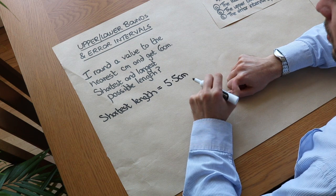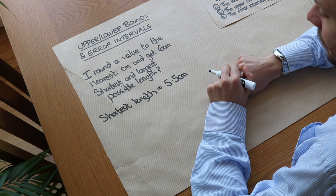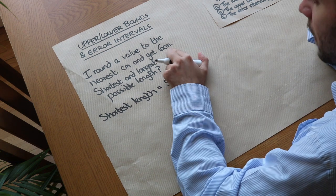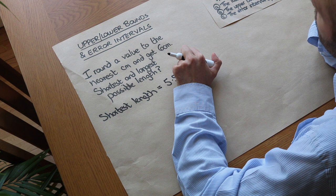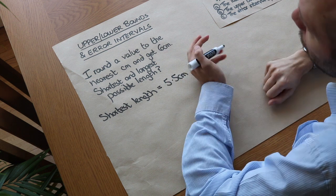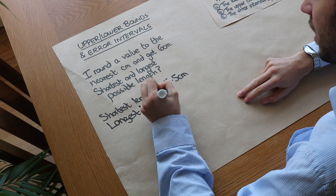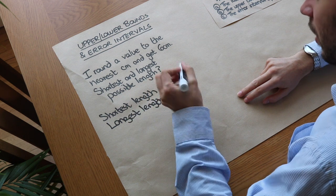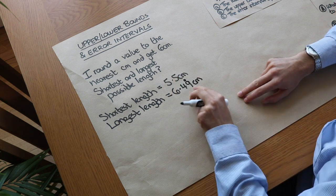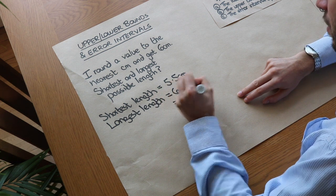What about the longest possible length? Well, 6.4 centimetres to the nearest centimetre rounds to 6. What about 6.5? That rounds up to 7 centimetres. But what about 6.49? That still rounds to 6 centimetres, and in fact we could have 6.499 etc. So the longest length before rounding to the nearest centimetre is 6.4999... recurring, i.e. 6.49 recurring centimetres. We can show that 6.49 recurring is actually the same as 6.5 centimetres.